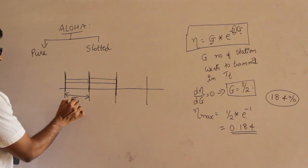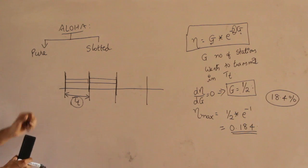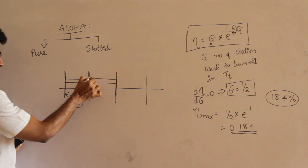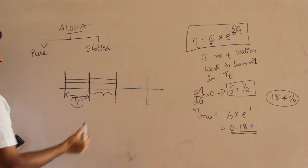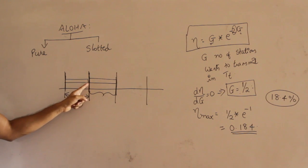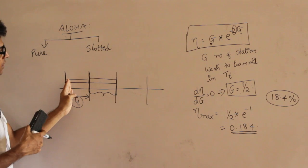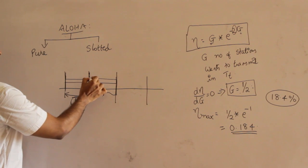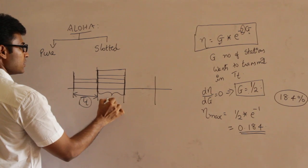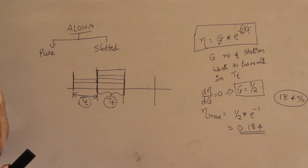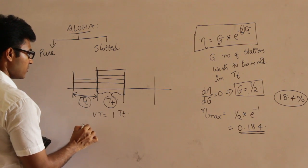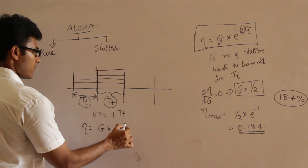In Slotted Aloha, what is the vulnerable time? If you start transmitting at some point, a previously started packet would have started only at the previous slot boundary and will be finished by now. So no packet from the previous slot collides with you. The collision is only possible within the current slot if someone else starts at the same point. Therefore, the vulnerable time in Slotted Aloha is only 1TT, and the efficiency formula is G × e^(−G).